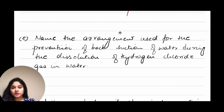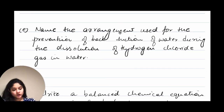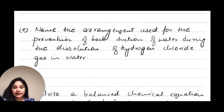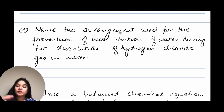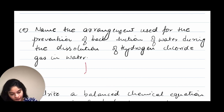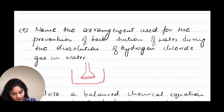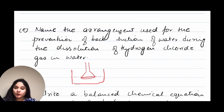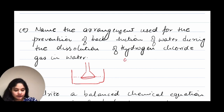Name the arrangement used for the prevention of back suction of water during the dissolution of hydrogen chloride gas in water — that is the inverted funnel arrangement. The inverted funnel arrangement looks something like this: you have the funnel inverted like this. We will go into more details on this later.